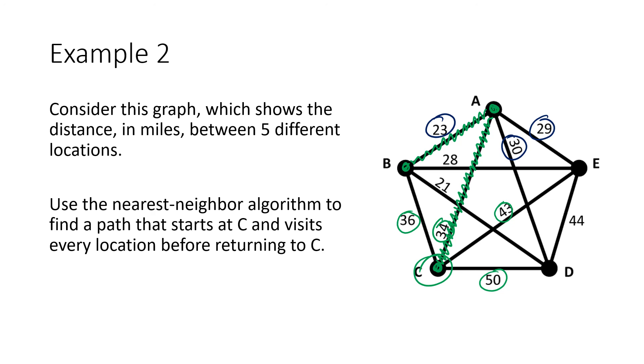So from B, there's only two places we can go, namely E and D. It's 28 miles from B to E, 21 miles from B to D, so we go to D. That's the lower number. So B along this edge costs 21, gets us to D.